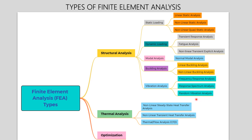In thermal analysis, there are further three types. This analysis mainly studies material behavior with respect to temperature variations. In non-linear steady state heat transfer analysis, we study structural behavior with respect to constant temperature. In non-linear transient heat transfer analysis, we change the temperature with respect to time and observe material behavior. In thermal fluid flow, this is a computational fluid dynamics analysis used to analyze general fluid dynamics, solid and fluid heat transfer, turbulent flow, mass transfer, and free surface problems.